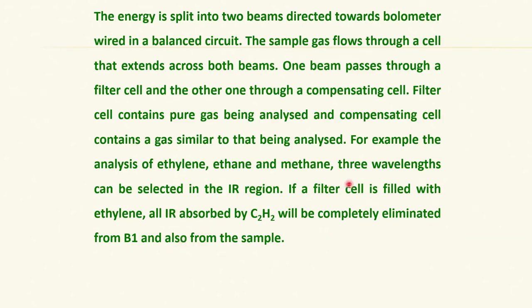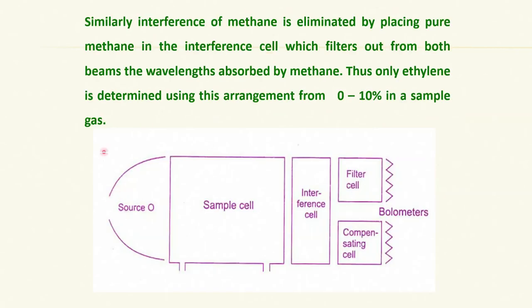One beam passes through a filter cell and the other one through a compensating cell. The filter cell contains pure gas being analyzed and the compensating gas contains a gas similar to that being analyzed without the sample. For example, in the analysis of ethylene, ethane, methane, three wavelengths can be selected in the IR region. If a filter cell is filled with ethylene, all IR absorbed by ethylene will be completely eliminated from B1 and also from the sample.